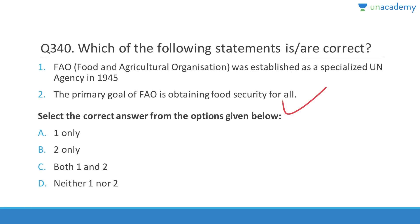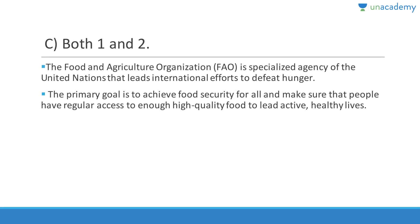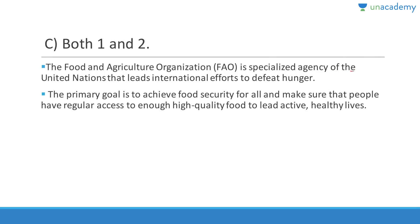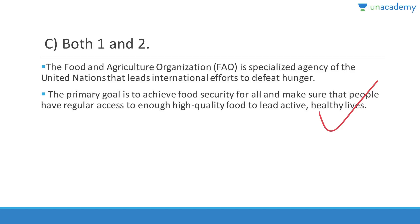Question 340: The Food and Agriculture Organization (FAO) was established as a specialized UN agency in 1945 — correct. The primary goal of FAO is obtaining food security for all — also correct. Answer is C (both 1 and 2). FAO leads international efforts to defeat hunger, ensuring people have regular access to enough high-quality food to lead active, healthy lives.